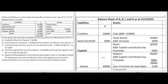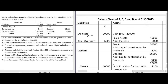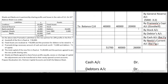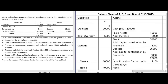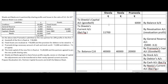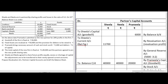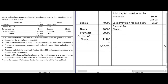Now we prepare the balance sheet of the new firm after admission. On the liability side: creditors remain Rs. 20,000 (unchanged); bank overdraft is Rs. 6,000 (unchanged). Capital accounts: Sheila Rs. 40,000, Neela Rs. 40,000, Pramila Rs. 20,000. Current accounts: Sheila's current account has a credit balance of Rs. 11,700, so it appears on the liability side.